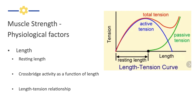A physiological factor that affects muscle strength is the length of a muscle. The length of the muscle is going to dramatically affect how much tension the muscle can generate. If we look at the blue line, the blue line is an example of how much tension the muscle can generate because of its contractile ability.